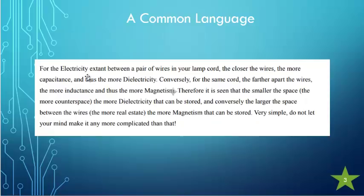For the electricity between a pair of wires in your lamp cord, the closer the wires, the more capacitance and thus the more dielectricity. Conversely, the further apart the wires, the more inductance and thus the more magnetism. Therefore, it is seen that the smaller the space, the more the counter space, the more dielectricity can be stored. And conversely, the larger the space, the more magnetism that can be stored.